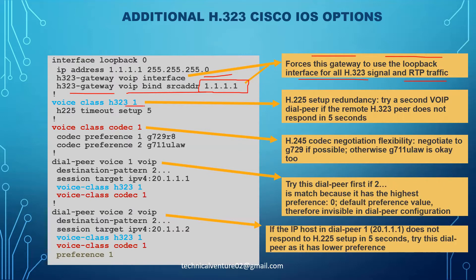Next, 'voice class h323 1' is configured with 'h225 timeout setup 5'. This is a timeout setting - if your H323 peer doesn't respond within the specified time (5 seconds), it will check for the next available dial peer. The H225 setup redundancy allows trying a second VoIP dial peer if the remote H323 peer doesn't respond in five seconds.